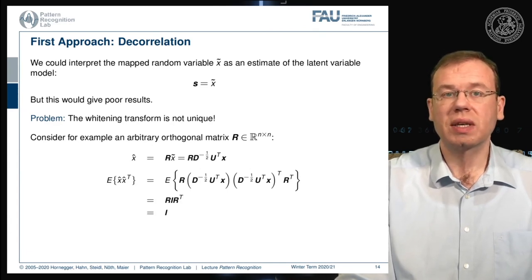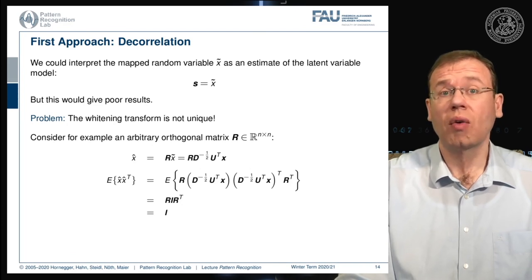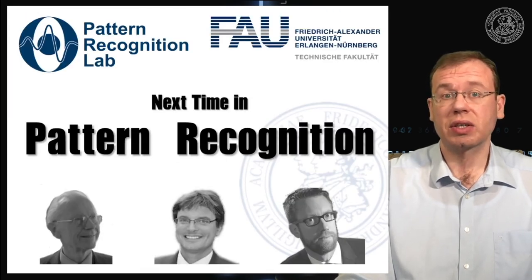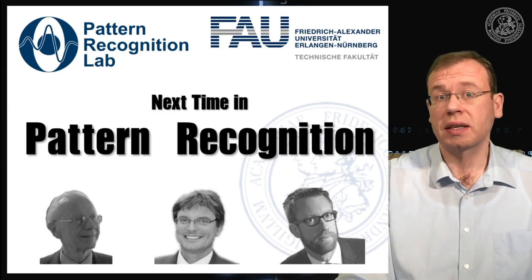So you can see we can choose an arbitrary orthogonal matrix R and multiply it to our whitening transform. And the property of being distributed with an identity matrix as covariance matrix would not vanish. So there is essentially an infinite number of whitening transforms that all fulfill this property.